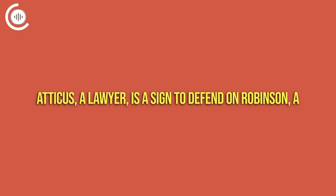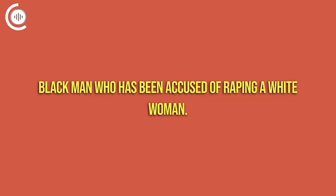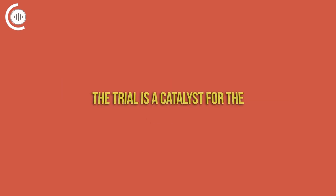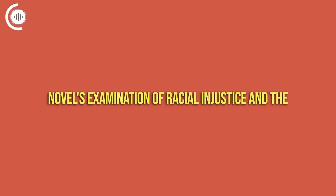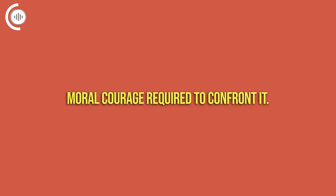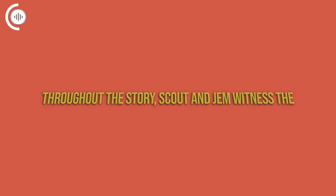Atticus, a lawyer, is assigned to defend Tom Robinson, a black man who has been accused of raping a white woman. The trial is a catalyst for the novel's examination of racial injustice and the moral courage required to confront it.